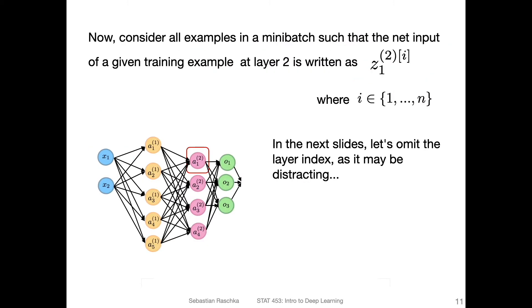And also now suppose we have a mini-batch such that the net input of a given training example at layer two is written as follows. So I have this index i here for the index of the training example in that mini-batch. And just for simplicity, I will actually ignore the layer index in the next couple of slides so that the notations are a bit simpler to read.